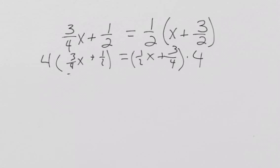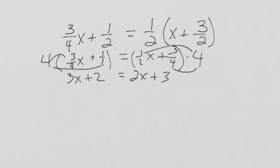Four times three-fourths, that's three x. Four times one-half, that's two. Four times one-half, well, we're going to get two x. And four times three-fourths, we get three. Now, we have our whole numbers to deal with.